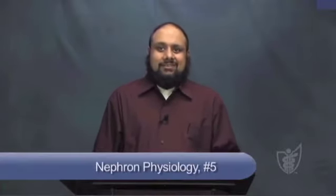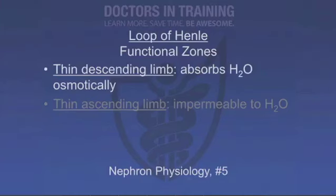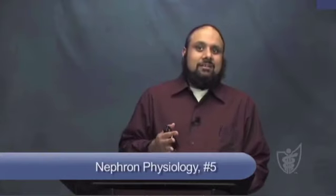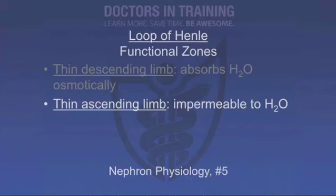The loop of Henle is the primary part of the nephron that dips down into the medulla of the kidney. There are two parts: the thin descending loop and the ascending loop. The thin descending limb absorbs water osmotically because of the very hypertonic medullary interstitium. By the time we reach the thin ascending limb, there's a three-fold increase in luminal sodium chloride concentration, but the thin ascending limb is impermeable to water.